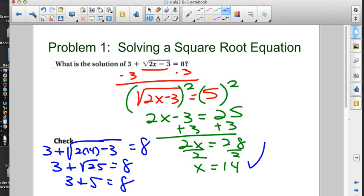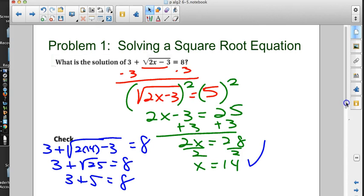I follow the order of operations. Two times fourteen is twenty-eight. Twenty-eight minus three is twenty-five. Three plus the square root of twenty-five. Three plus five does equal eight. Good news. It works. Good news. There it is. But, we need to check.